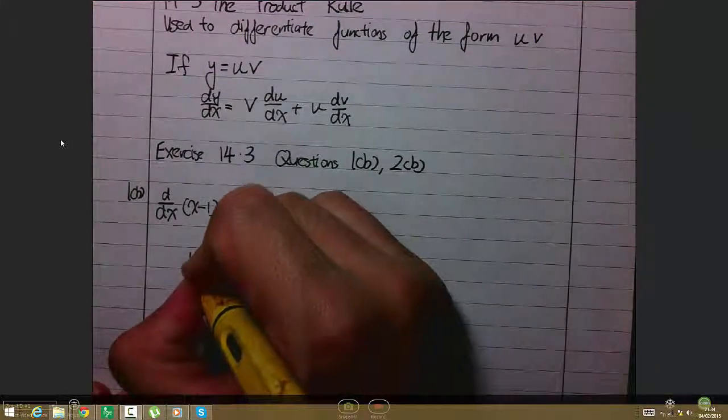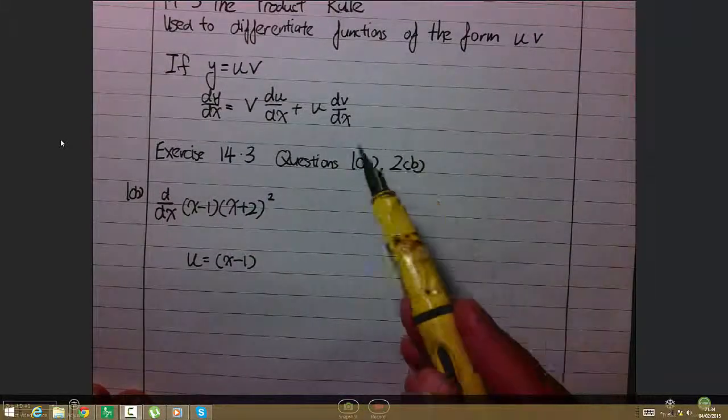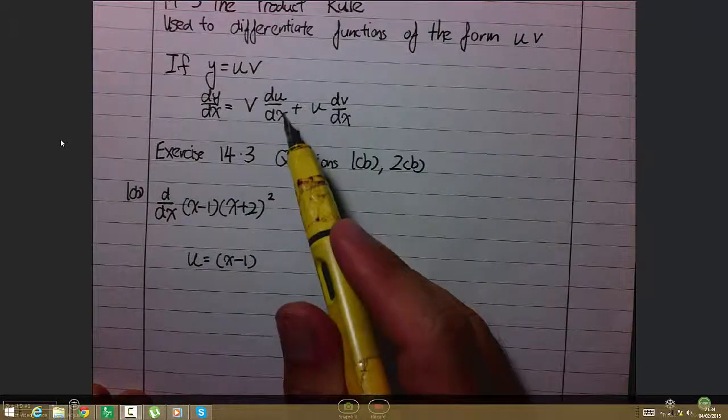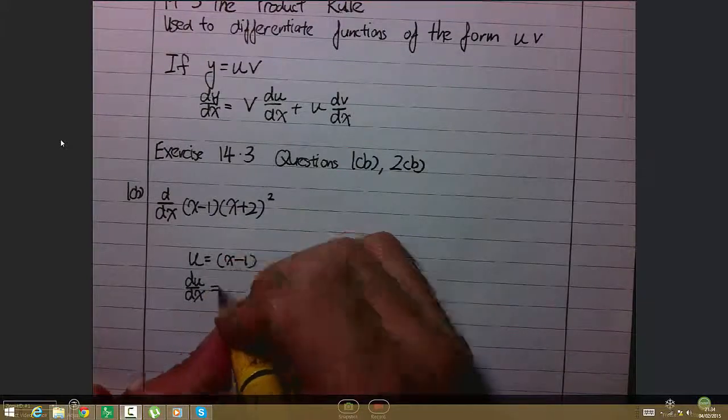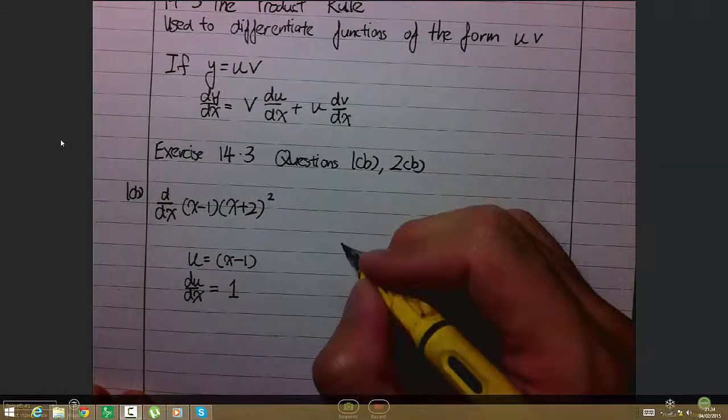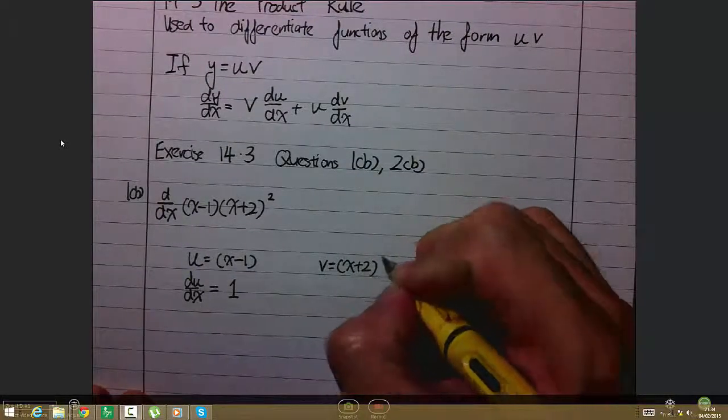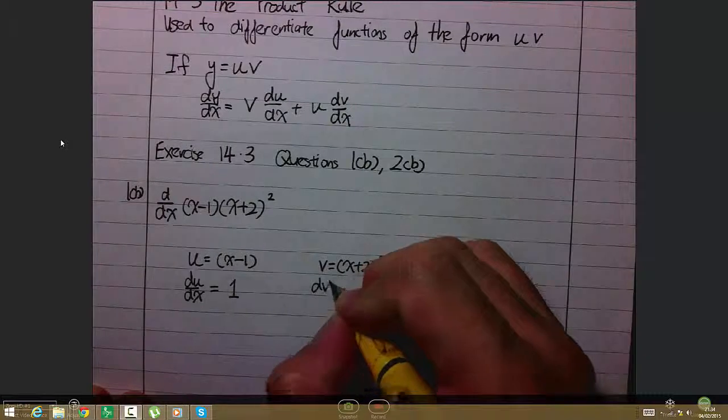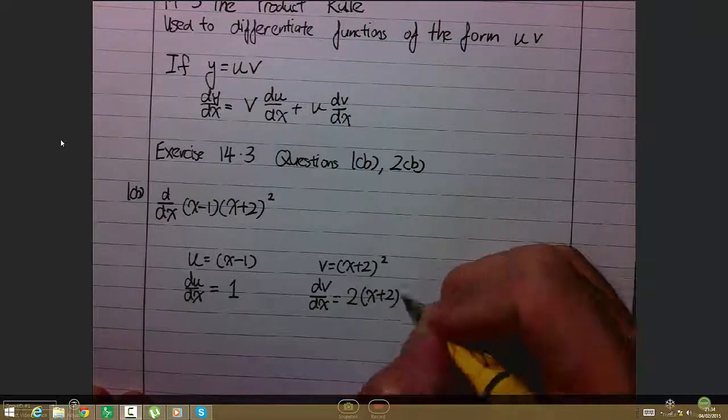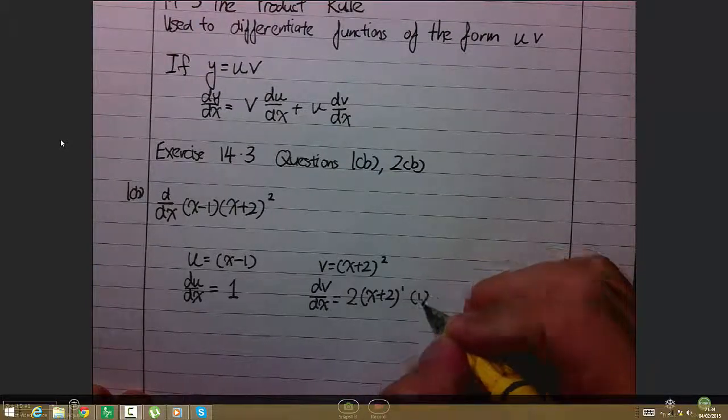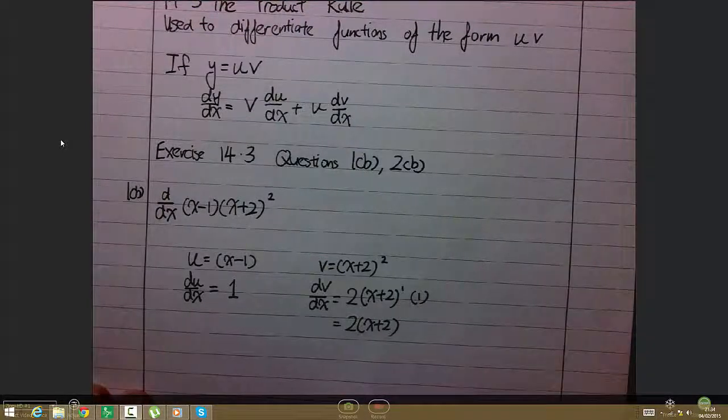Let u = x-1. Then du/dx = 1. Similarly, v = (x+2)². Differentiating v with respect to x, I get 2 times (x+2) to the power 1 times 1, which is simply 2(x+2). This is application of the chain rule.